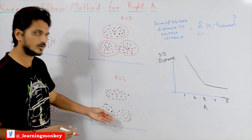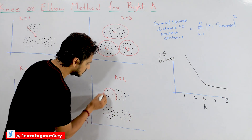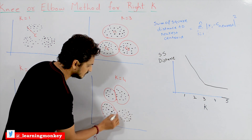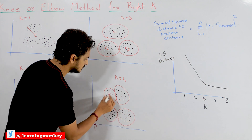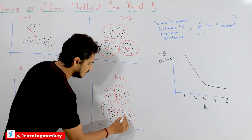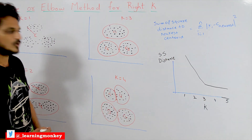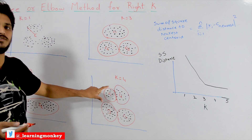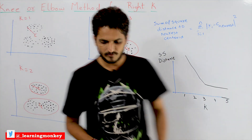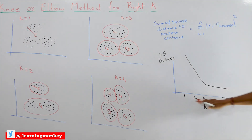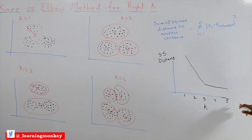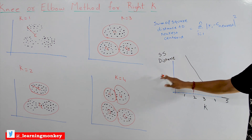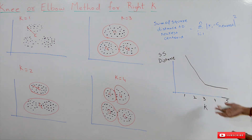As K equal to 4, assume that after applying K-means clustering it forms clusters with centroids C1, C2, C3, and C4. We use this sum of squared distances to identify the best K value. How we identify it: we plot a graph where on the X-axis we take K values 1, 2, 3, 4, and so on, and on the Y-axis we take the sum of squared distances, then plot the sum of squared distances versus K value.